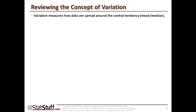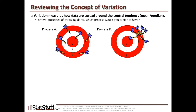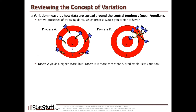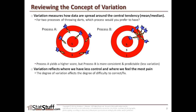We've said before how variation measures how spread out the data points are from the central tendency — the mean or the median. We've described how we might have two processes represented by throwing darts. Process A might yield a higher score and a higher central tendency because it hits higher values, but process B is more consistent and predictable. As a result, there's less variation and we have better control over it. Variation reflects the area where we have less control and where we might feel the most pain in our process.